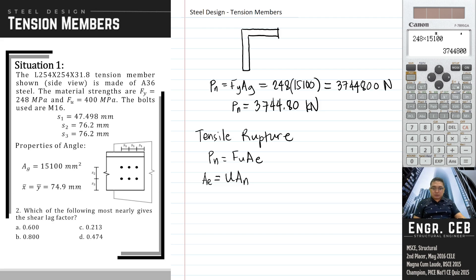Going back, using case 2, the shear lag factor is determined by U equals 1 minus x bar over L. By the way, x right here is the distance from the centroid of the member to the plane of connection. If we draw the angle, and then here's the plate wherein the angle is connected, the distance x bar is the distance from the plane of connection. That is the interface wherein the two members are connected. This is the centroid of the angle.